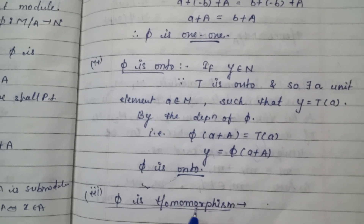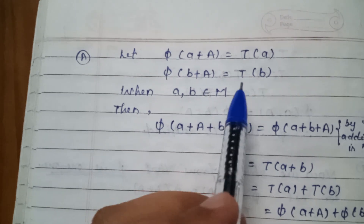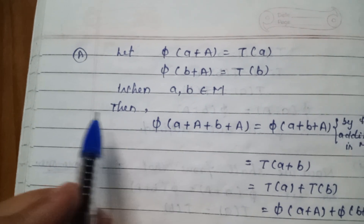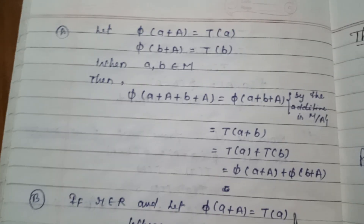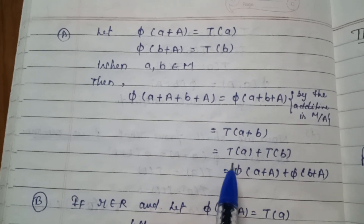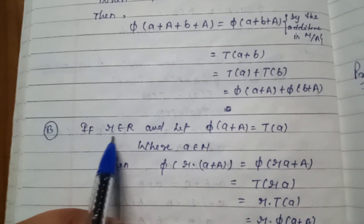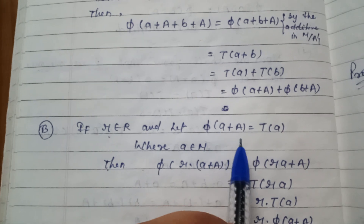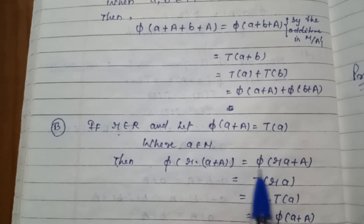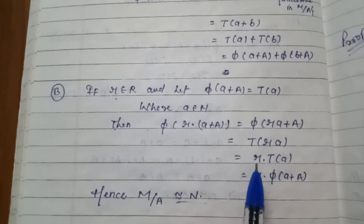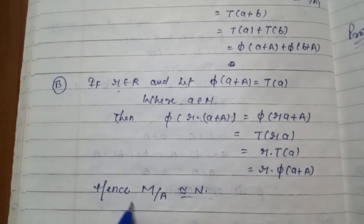Now we have to prove that phi is a homomorphism. Let phi(a + A) = T(a) and phi(b + A) = T(b), where a, b belong to M. Then phi((a + A) + (b + A)) = phi((a + b) + A) = T(a + b) = T(a) + T(b) = phi(a + A) + phi(b + A). For the second condition, if r belongs to R, then phi(r·a + A) = phi(r·a + A) = T(r·a) = r·T(a) = r·phi(a + A). Hence M/A is isomorphic to N.